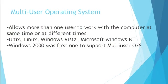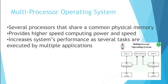Nowadays we use multi-user operating systems, which allow more than one user to work with a computer at the same time or at different times. For example, if you have Windows NT networking software installed, your computer's CPU and memory can be used by another person sitting at a different computer and trying to use the hardware of your computer. Examples include Unix, Linux, Windows Vista, Microsoft Windows NT. Windows 2000 was the first to support multi-user operating systems.